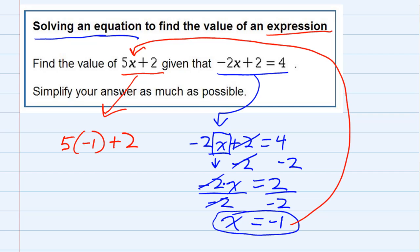And then using the order of operations, 5 times negative 1 is negative 5. Got to do that one first, and then add 2. The signs are different, so we subtract, keep the sign of the larger. So this is our answer, the value that we got when we plugged in the negative 1 into our expression. Our answer is negative 3.